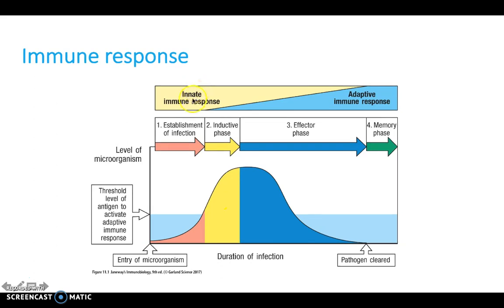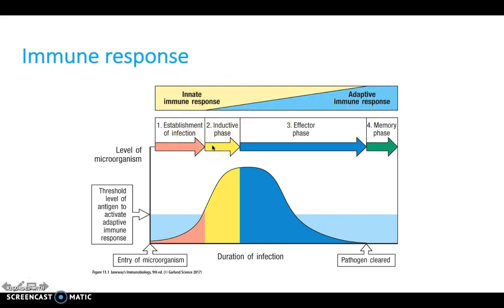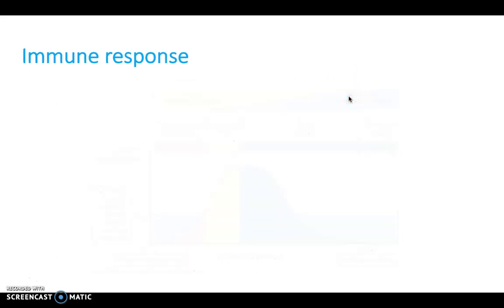What we see here are two responses: the innate immune response and the adaptive immune response. This is the infection that the organism has been infected with, and as you can see, as the duration of infection goes on, our response changes from being innate to adaptive. We'll discuss what this means a little bit more later on, but it's really important to understand these two aspects.